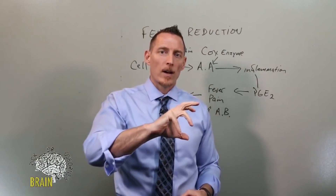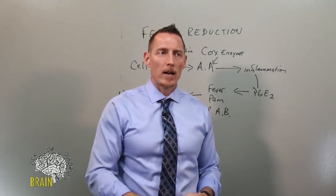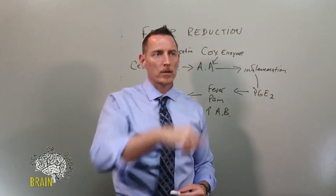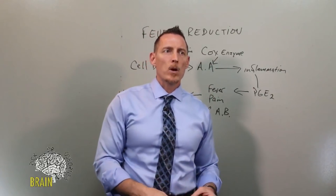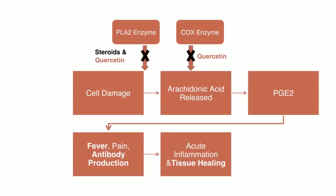Quercetin also blocks the cyclooxygenase enzyme — the COX enzyme. Earlier I discussed how NSAIDs block this enzyme, and now we're showing that quercetin can also block it. Quercetin doesn't block it quite as aggressively, but it does so without interfering with the healing phase after the acute inflammatory phase is over.